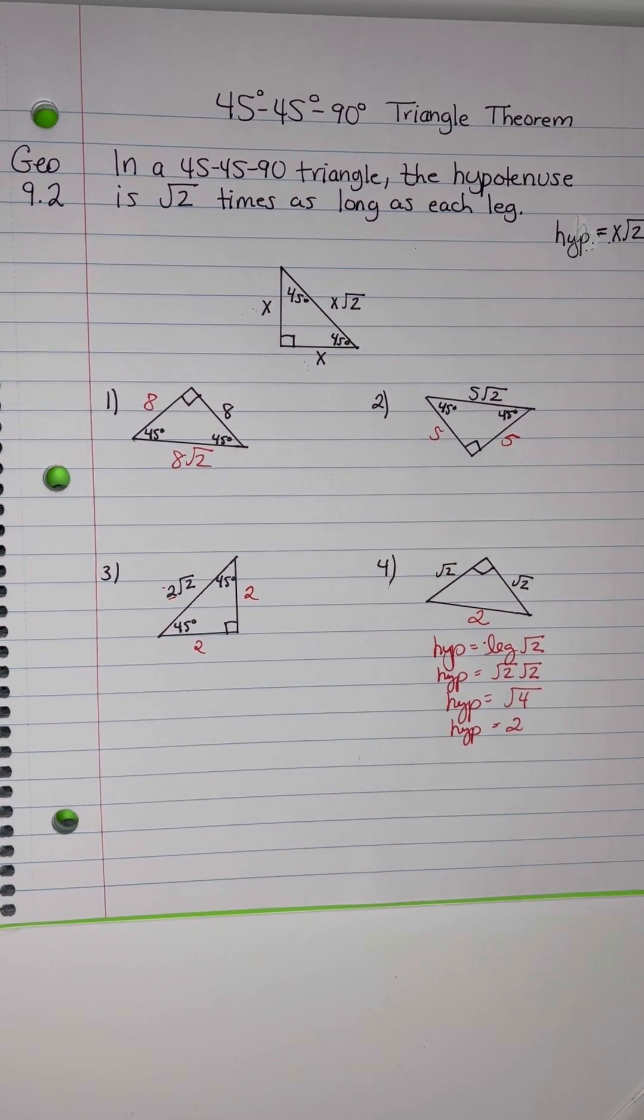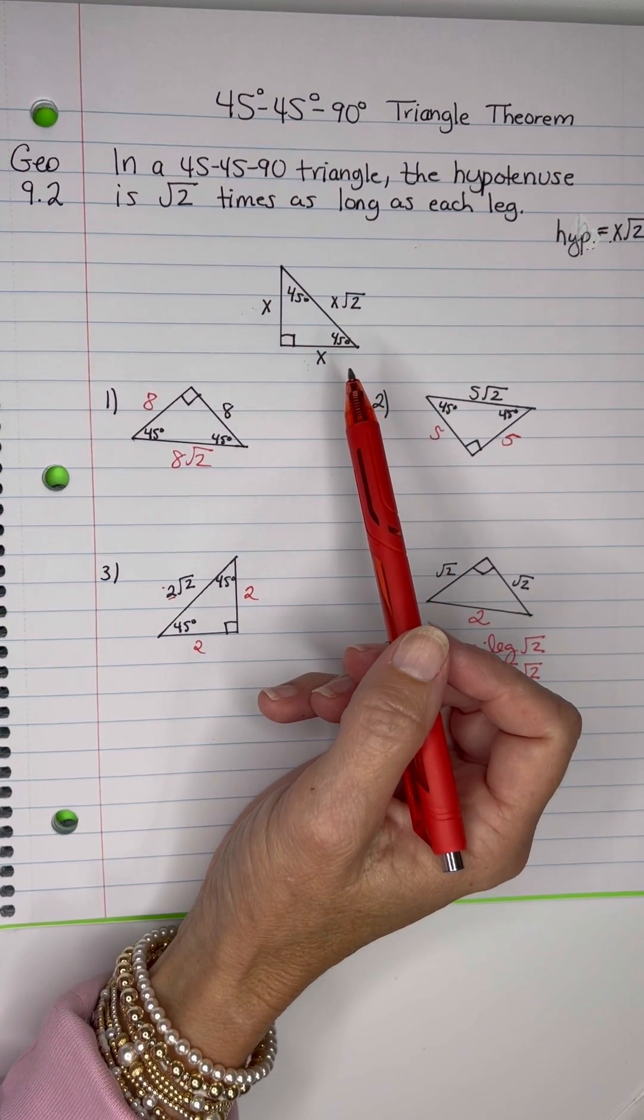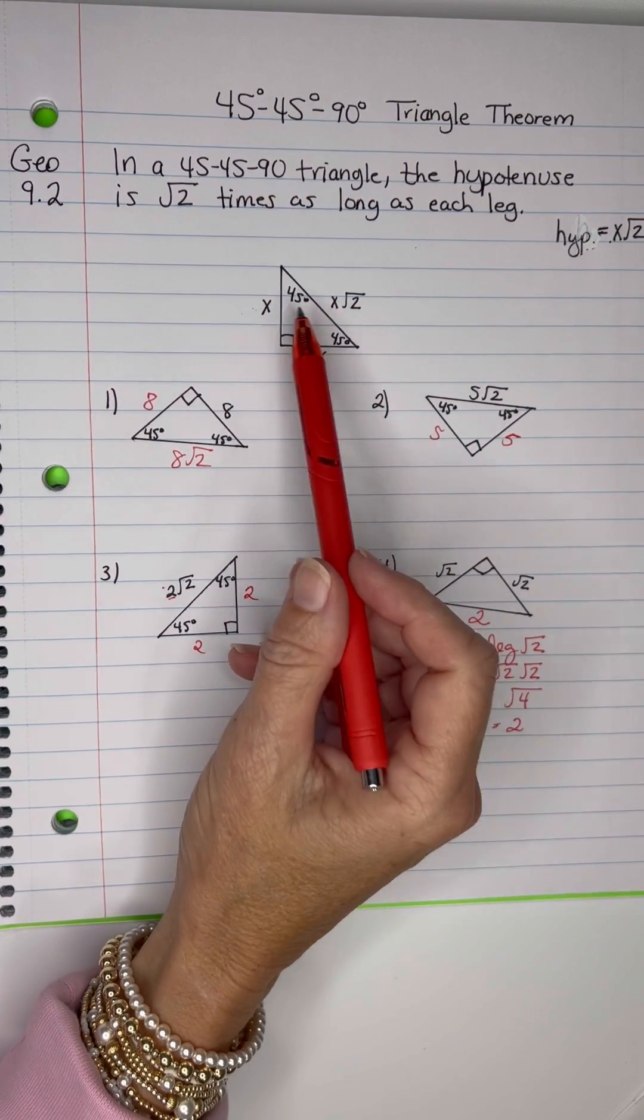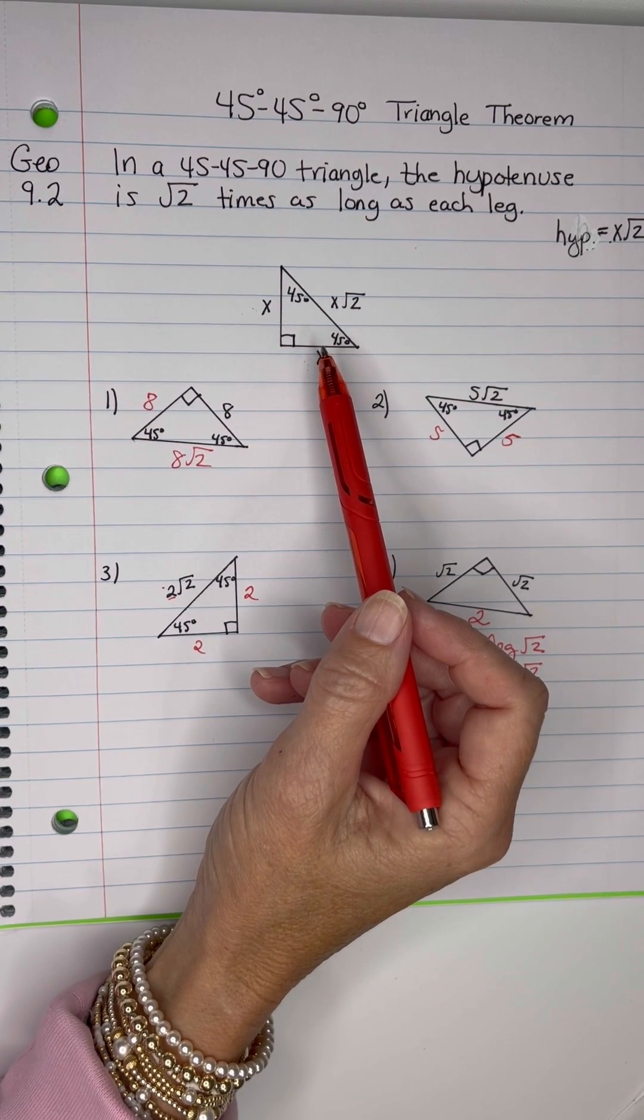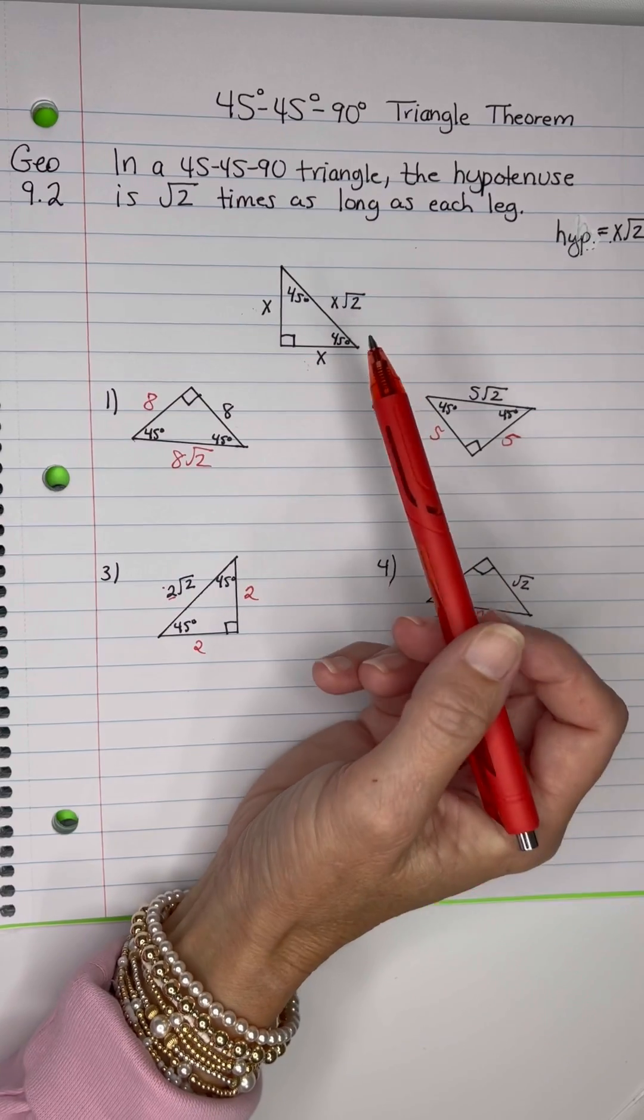Now, I know I can't sing, but here's a little song I found on YouTube that helped my students to keep the 45-45-90 triangle separate from the 30-60-90 triangles that I will teach shortly. And it goes like this.